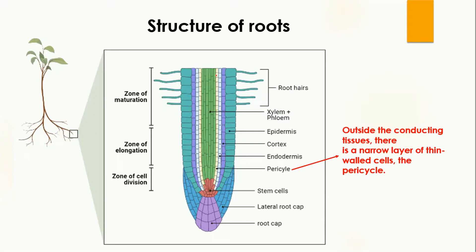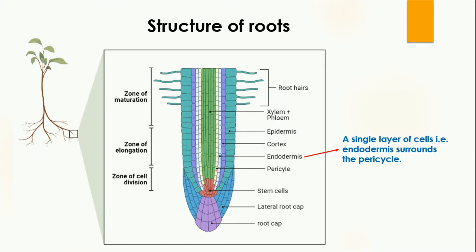Outside the conducting tissues there is the pericycle, shown here in pink. It is a narrow, thin-walled layer.